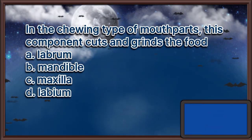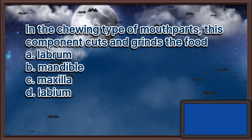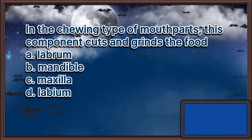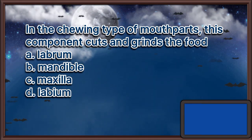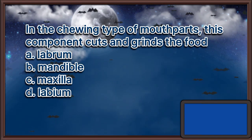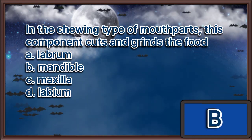In the chewing type of mouthparts, this component cuts and grinds the food. A. Labrum. B. Mandible. C. Maxilla. D. Labium. The answer is letter B.